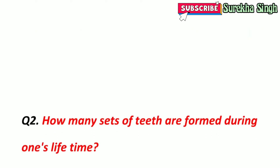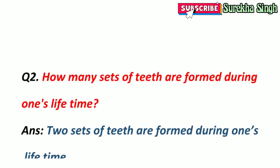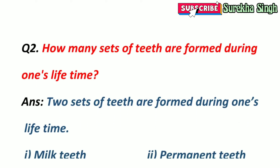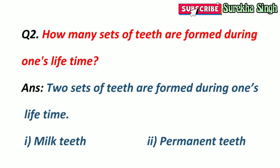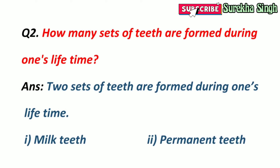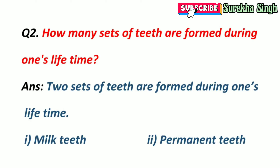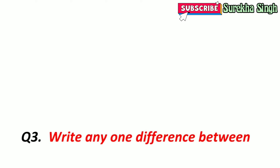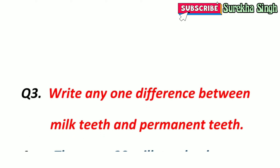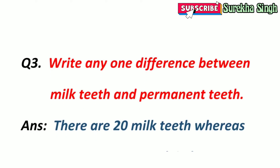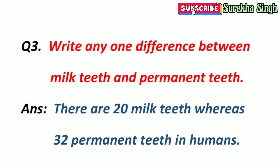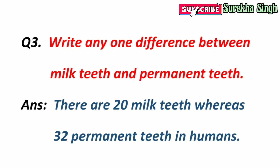2. How many sets of teeth are formed during one's lifetime? Two sets of teeth are formed — milk teeth and permanent teeth. 3. Write any one difference between milk teeth and permanent teeth. Milk teeth are 20 in number and permanent teeth are 32 in number.